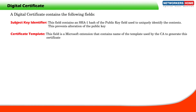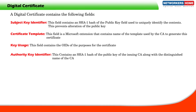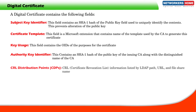Certificate template: This field is a Microsoft extension that contains the name of the template used by the CA to generate this certificate. Key usage: This field contains the OIDs of the purposes for the certificate. Authority key identifier: Contains the SHA-1 hash of the public key of the issuing CA along with the distinguished name of the CA.